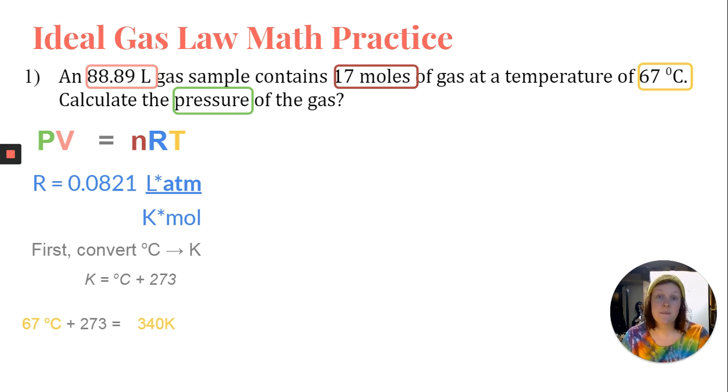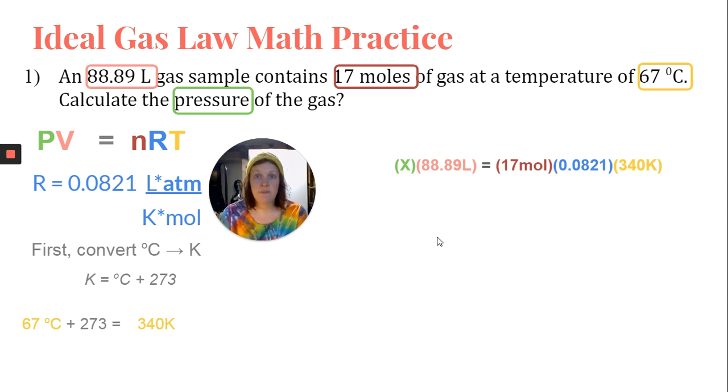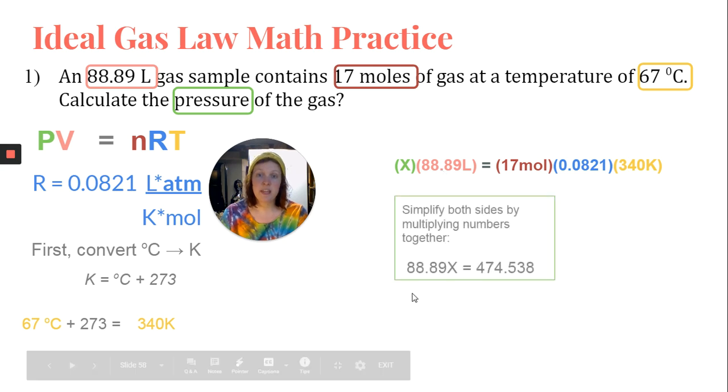Now we can plug in our information into the original ideal gas law equation. This is what our setup should look like. The first thing that I'm going to do is simplify both sides by combining like terms. I'm going to multiply 17 times 0.0821 times 340. And I'm going to multiply X times 88.89. And I'm going to end up with 88.89X is equal to 474.538. And again, don't worry about the sig figs right now.